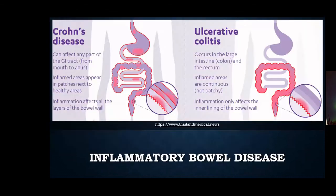One disease I want to talk about is IBD, characterized by continual inflammation in the gastrointestinal tract. There are two types: Crohn's disease and ulcerative colitis. Crohn's disease can affect any part of the GI tract, appearing as patches next to healthy areas and affecting all layers of the bowel wall. UC occurs only in the large intestine and rectum, with continuous patches affecting only the inner lining. IBD is believed to affect one in 250 people.